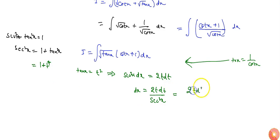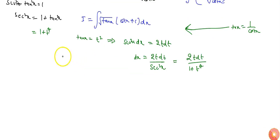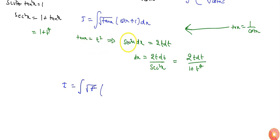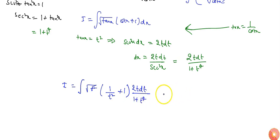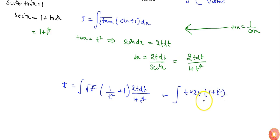So dx becomes 2t dt divided by 1 plus t⁴. Now putting this into the integration, I get I equals integration of root(t²) multiplied by cot x, which is 1 by t², plus 1, and the value of dx is 2t dt by 1 plus t⁴. Solving this expression gives t multiplied by 2t and 1 plus t² by 1 plus t⁴ into t² dt.